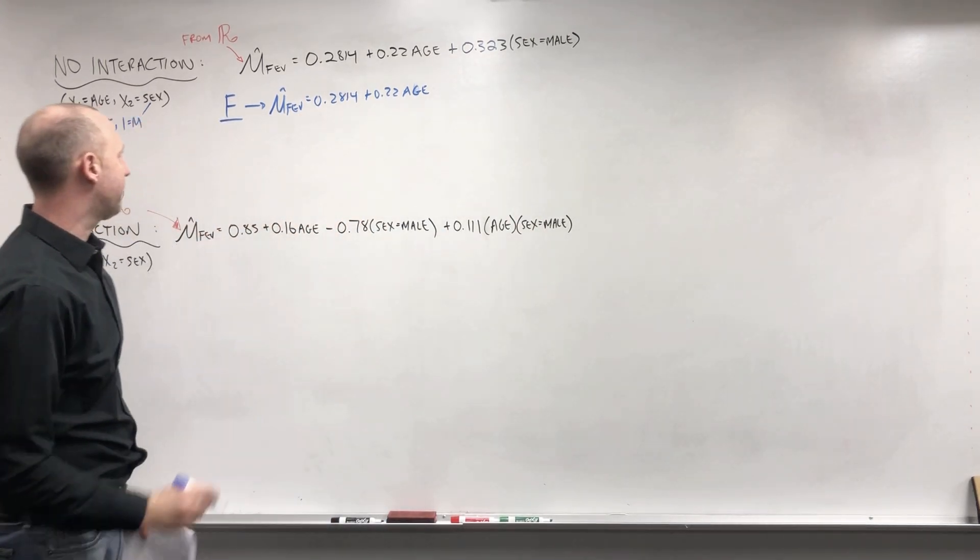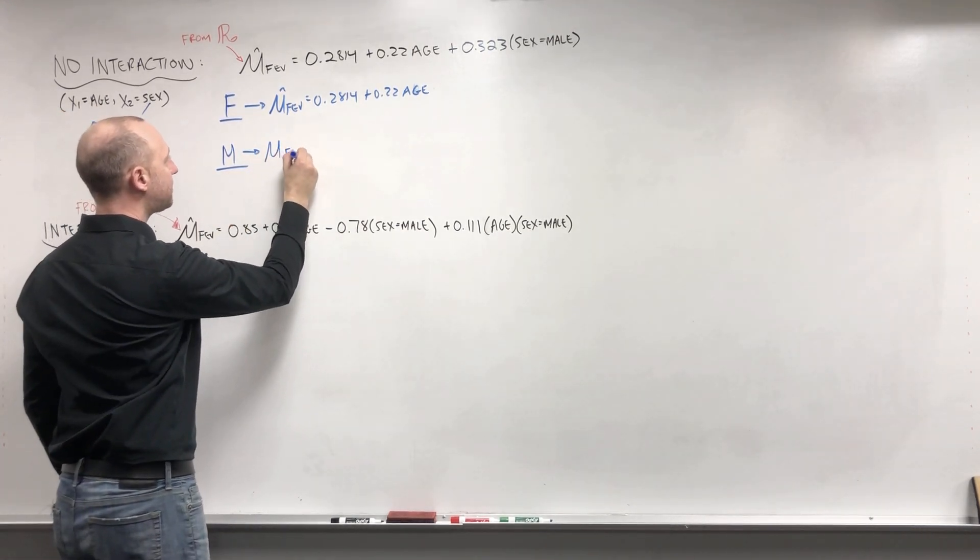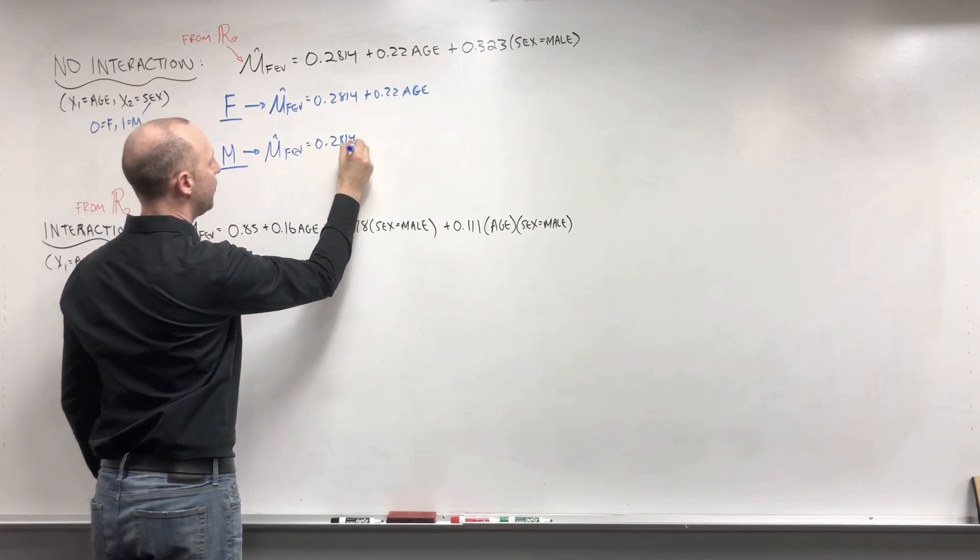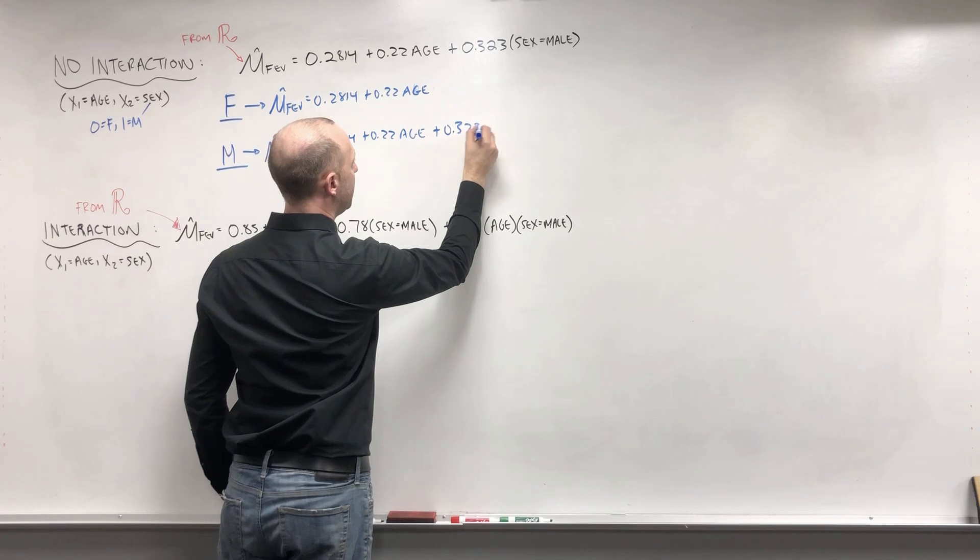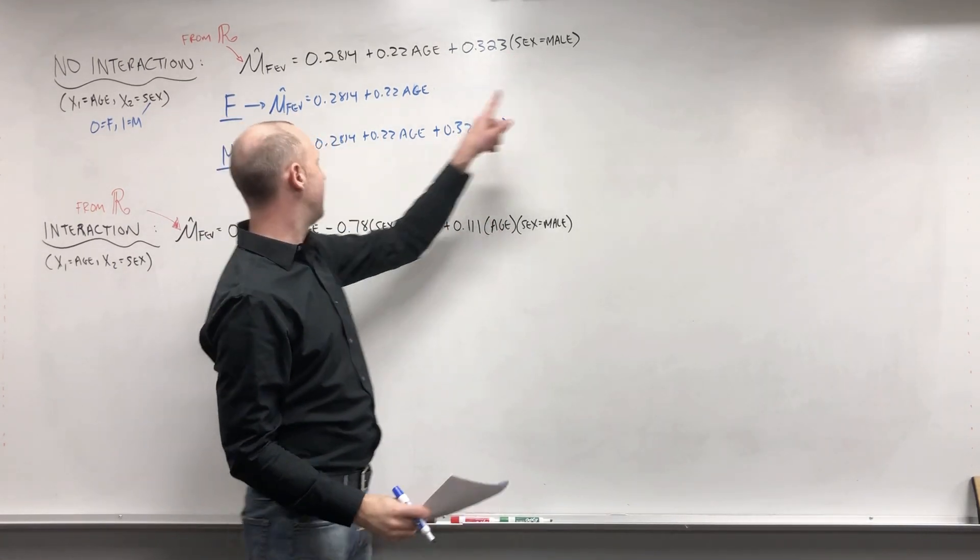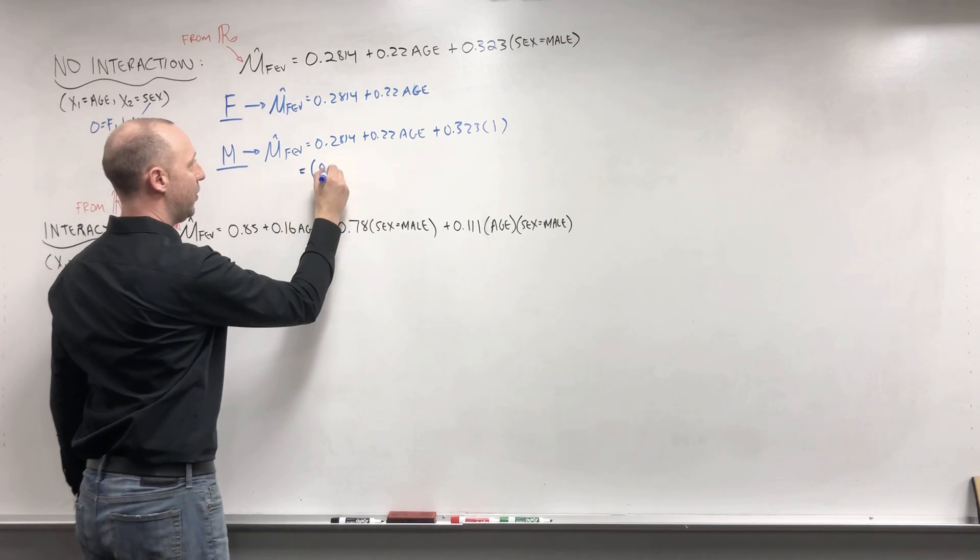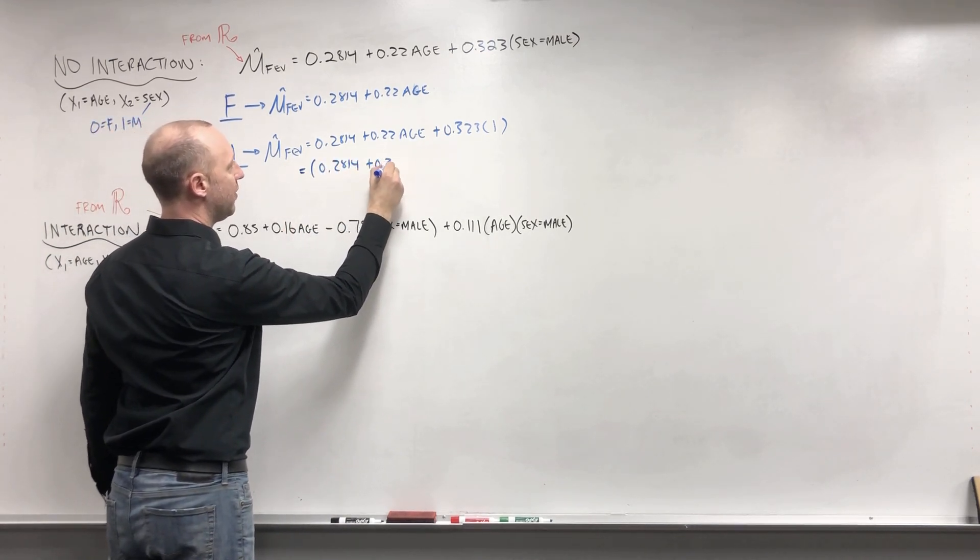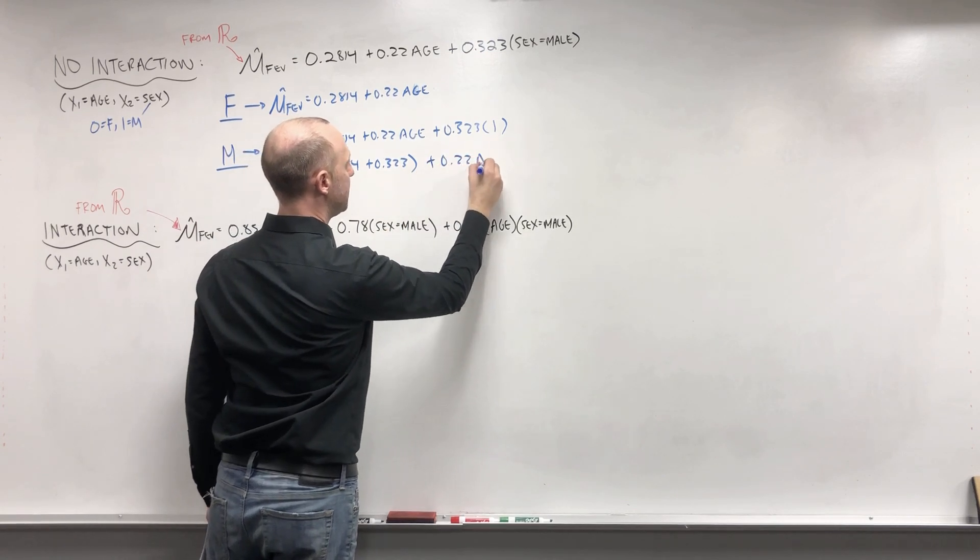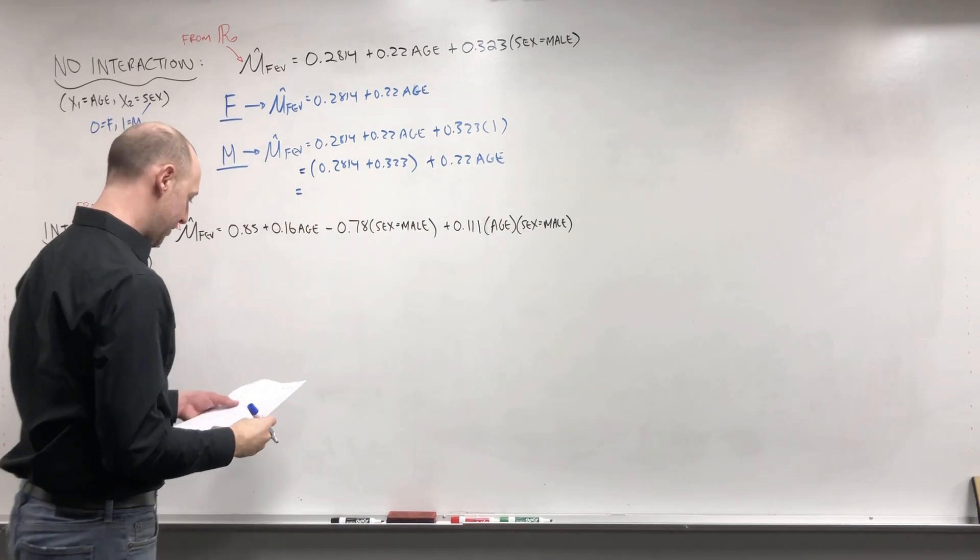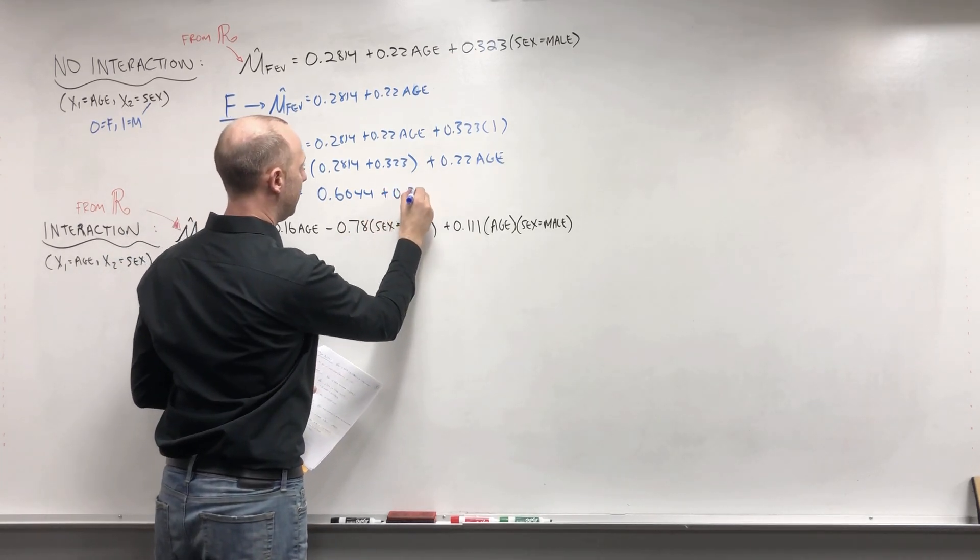Then if we want to work out the line for males, the mean FEV is 0.2814 plus 0.22 times the age plus 0.323. And again, this indicator takes in a value of 1 if they're male. Right here we're saying this is line for males, so that takes in a value of 1. So this is 0.2814 plus 0.323. So this term becomes part of the intercept plus 0.22 times age. Or if you add those together, 0.6044 plus 0.22 times age.